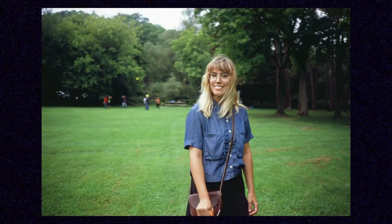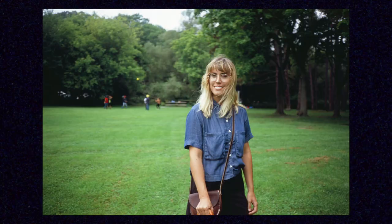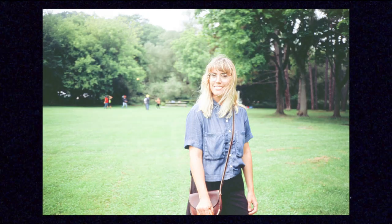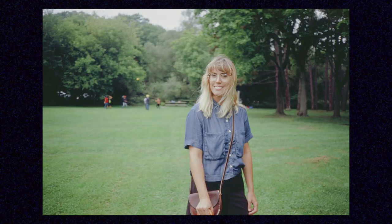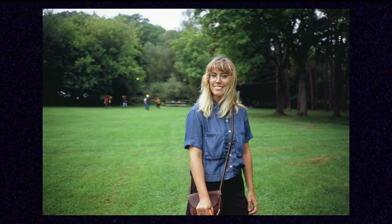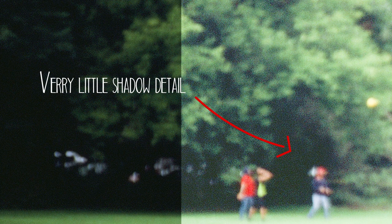Unlike negative film, color slide film needs a very precise exposure. You never want to go too far over or too far under when shooting these types of films — they just don't have a very good range. So you have to be really precise and make sure you're setting that ISO knob to the proper number when shooting things like Provia, Velvia, or Ektachrome.